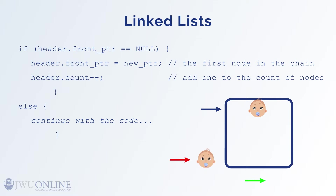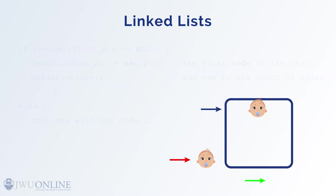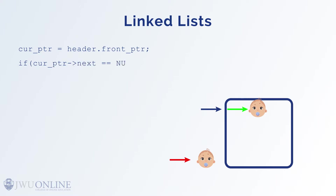If we do another malloc — creating a second, third, or nth baby — this baby needs to be chained into the linked list. We would again check if the list is empty. Since this time it's not, we will traverse or follow the chain looking for a null in the next field of our node structure and place the new pointer there. To traverse the list, we use our second temporary pointer, curr_ptr. Set the current pointer to point to wherever the head's front_pointer is pointing: curr_pointer = header.front_pointer;